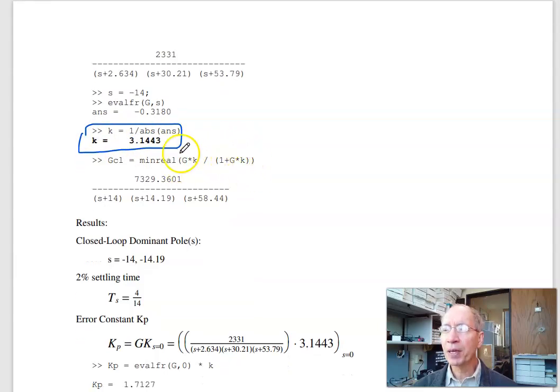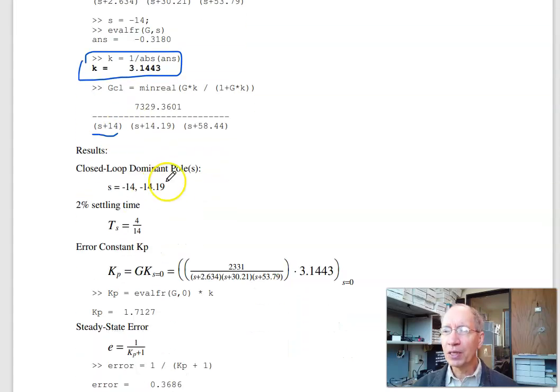As a check, close the feedback loop with that value of k. There's a pole at minus 14. That's the one I just placed there. And there's two other poles. It's a third order system. This says I'm not quite at the breakaway point, but pretty close. When I'm done, I'll have the dominant pole at minus 14, minus 14.19.